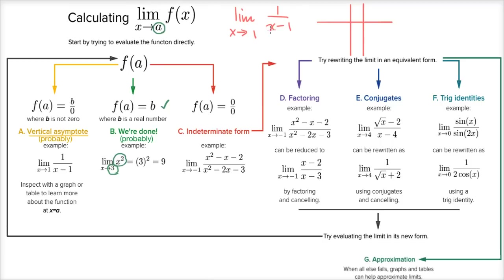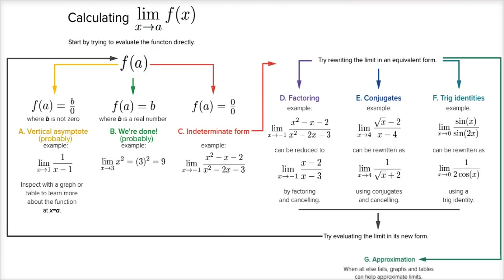That's probably what you have. Now there are very special cases where you won't necessarily have a vertical asymptote — one example would be something like one over x minus x, which is actually undefined for any x you give it. But most times, when you get a nonzero number over zero, you do have a vertical asymptote there.